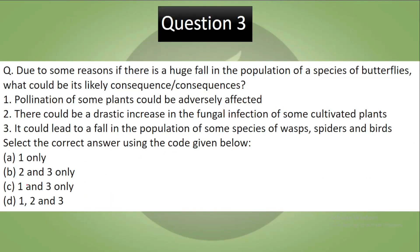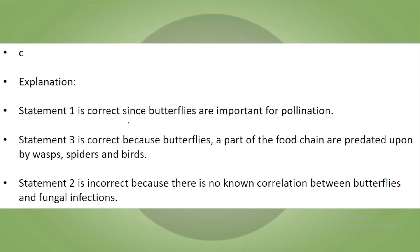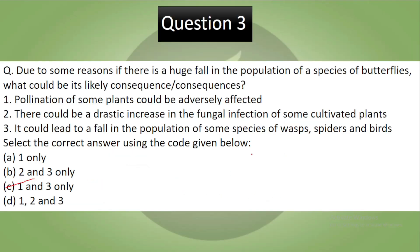Now let's discuss the answer. Your correct answer is C, which is 1 and 3 both. Statement 1 is correct since butterflies are important for pollination in nature. Statement 3 is correct because butterflies are part of the food chain — they are predated upon by wasps, spiders, and birds. Statement 2 is incorrect because there is no known correlation between butterflies and fungal infection. The correct answer is C.